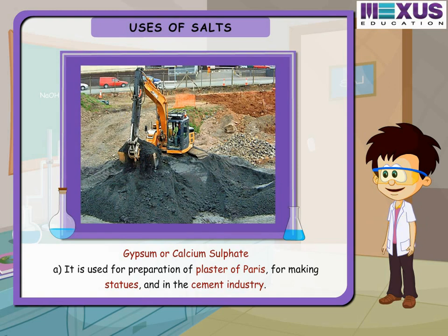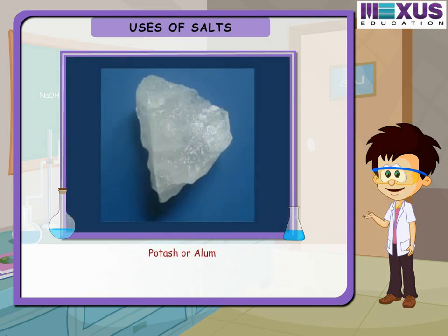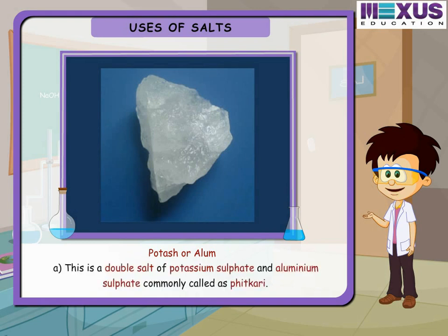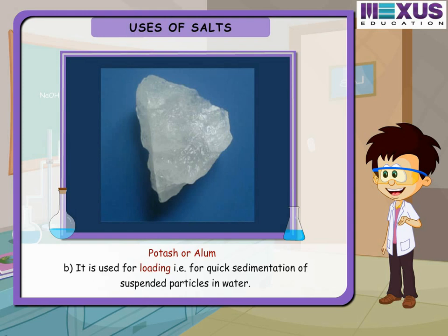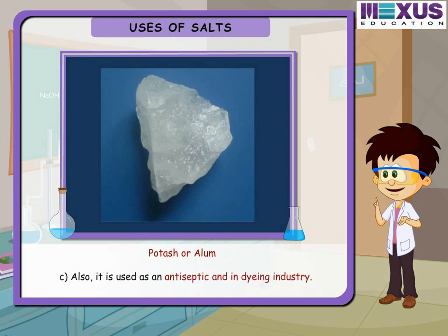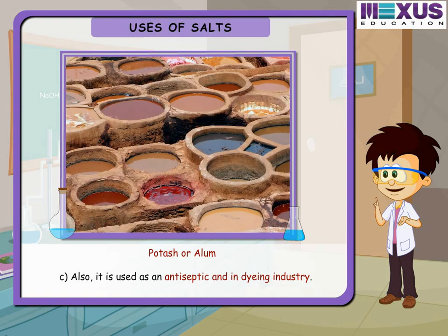Gypsum, or calcium sulfate, is used for preparation of plaster of Paris, for making statues, in the cement industry, and for fabrication in walls and boards. Potash alum is a double salt of potassium sulfate and aluminium sulfate, commonly called phitkari. It is used for flocculation — quick sedimentation of suspended particles in water — and also as an antiseptic and in the dyeing industry.